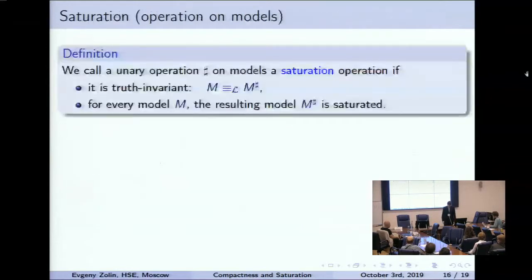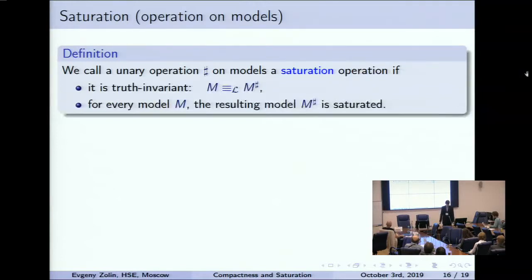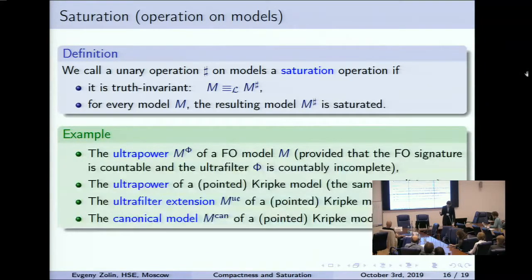But now we want to replace the condition that the class is saturated by the condition that the class is closed under some operation. We need a saturation operation: a unary operation that takes one model and returns another. It is called a saturation operation if it is truth-invariant — the new model satisfies exactly the same formulas as the old one — and the new model is always saturated.